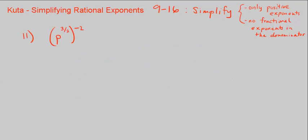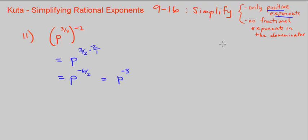Let's go on to number 11. We have p to the 3 halves, raised to the negative 2 power. We multiply the exponents: 3 halves times negative 2, which is negative 6 over 2, equal to p to the negative 3. But we want only positive exponents, so we put it in the denominator, making it 1 over p cubed. We don't have any fractional exponents, so we're done.